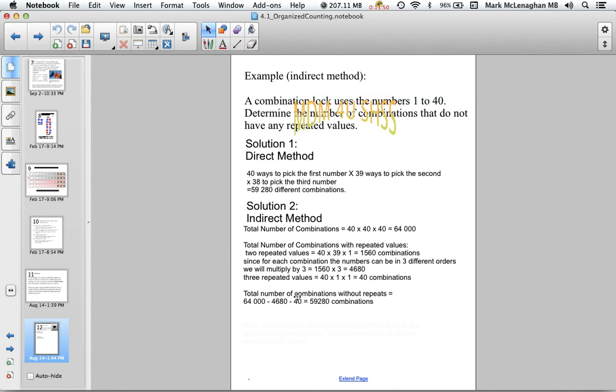The total number of combinations without repeats is the total number (64,000) minus the two repeats (4,680) minus the three repeats (40), which gives us a total of 59,280 different combinations.